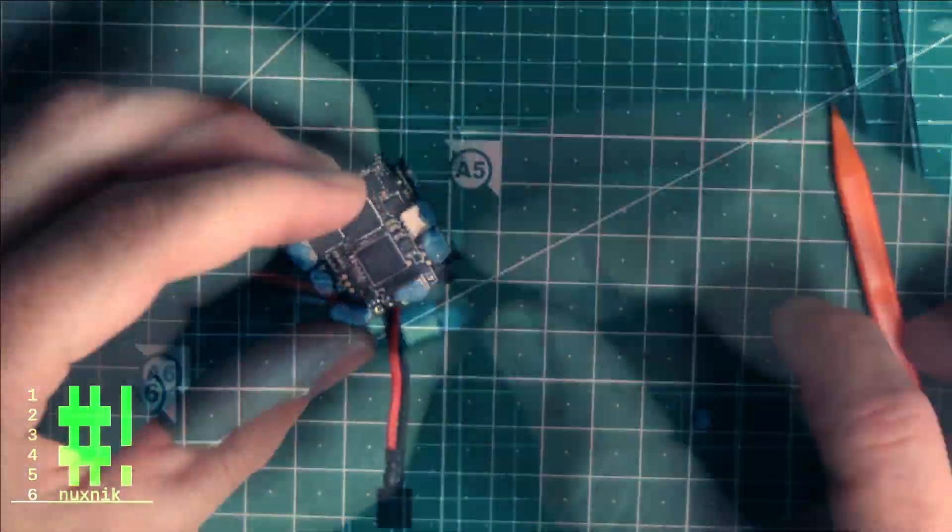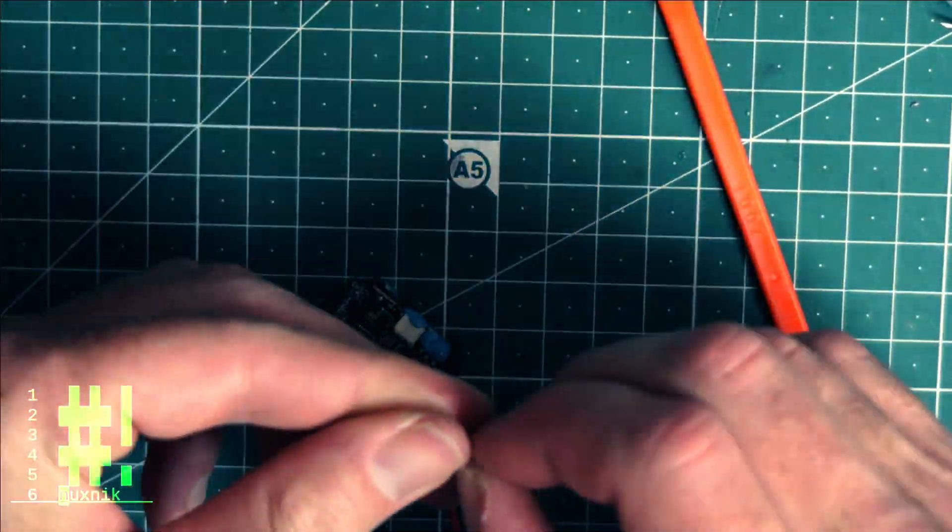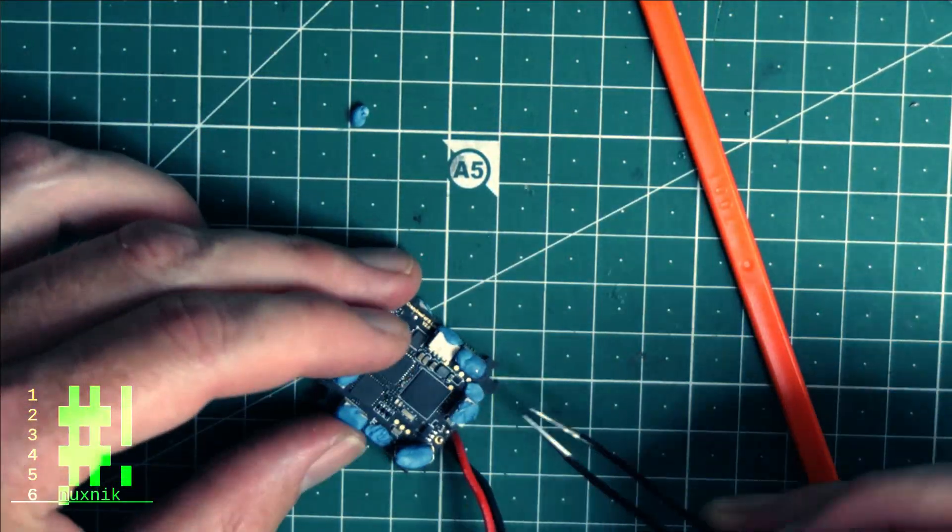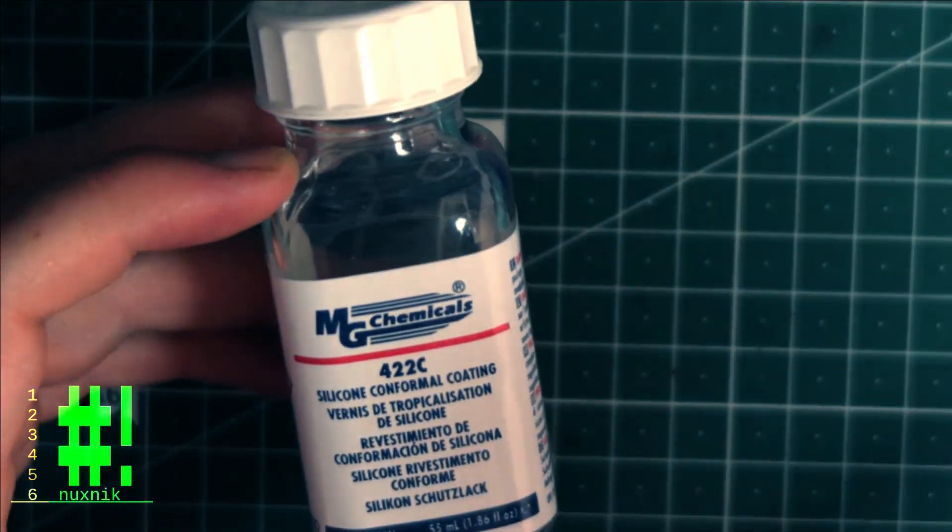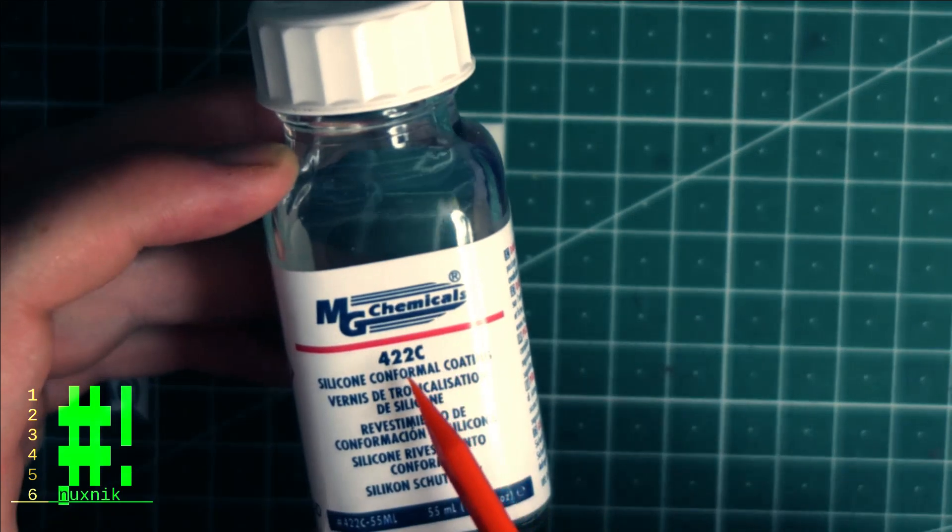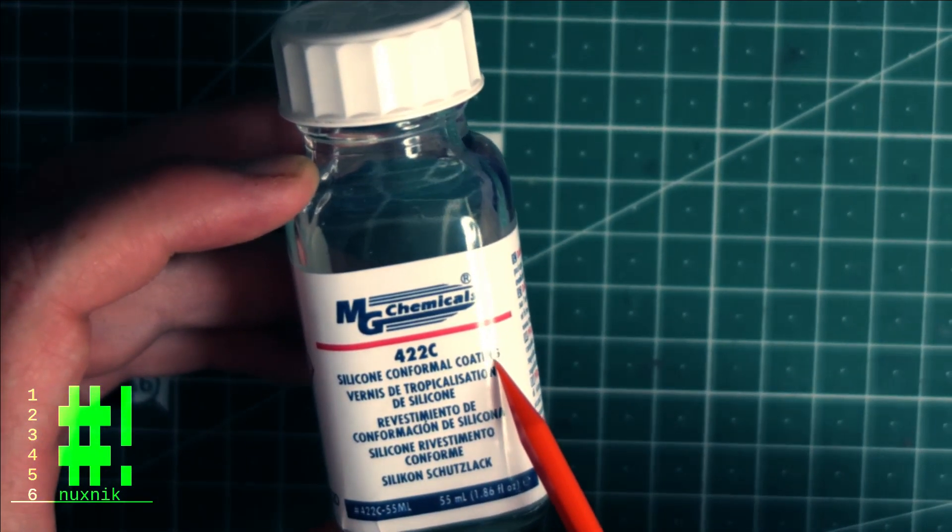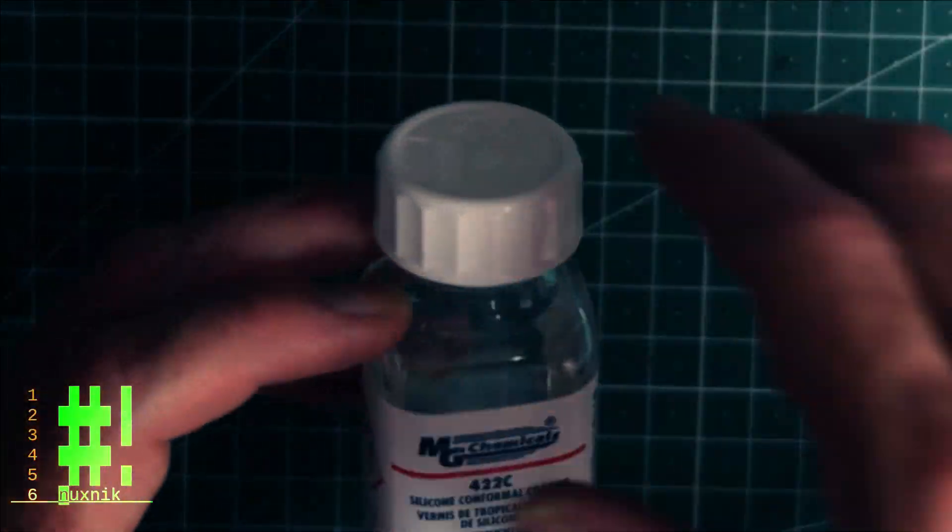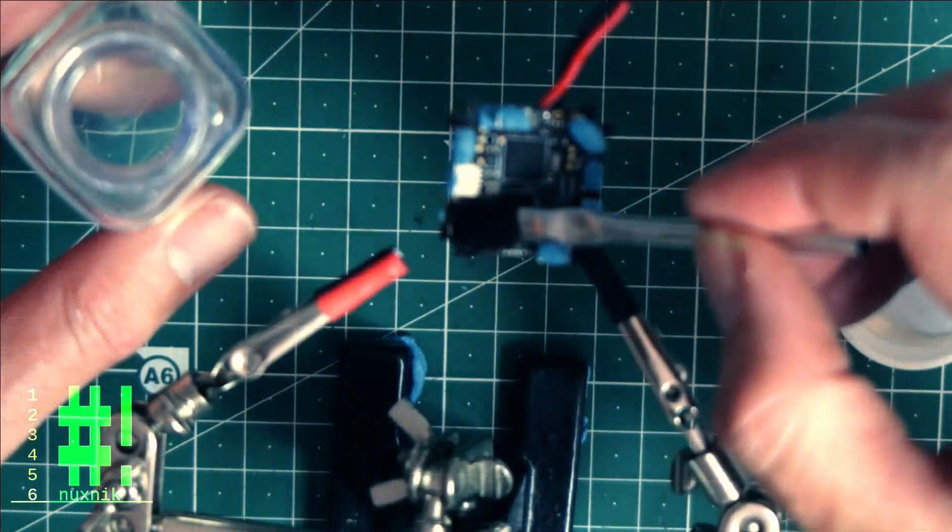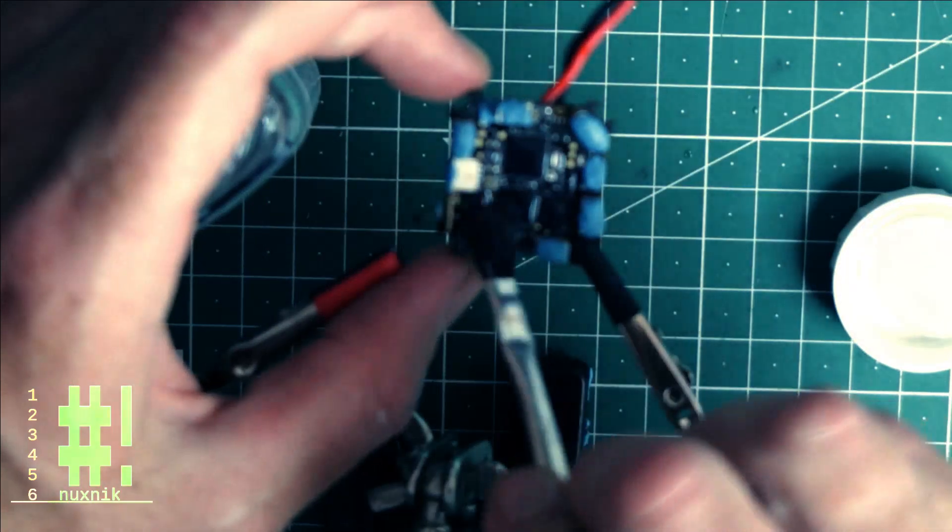One is water resistance. Conformal coating protects your board from moisture. For most Tiny Whoop pilots, we fly indoors so water is not much of an issue. Albeit, having conformal coating has saved my bacon a few times in the past. Crashing into wet grass, puddles, sinks, toilets, or open drinking containers can happen.